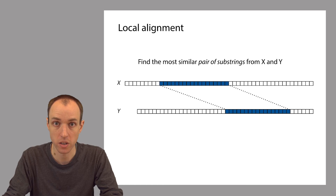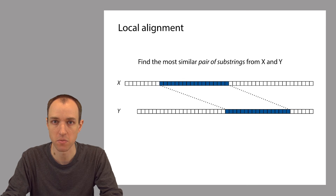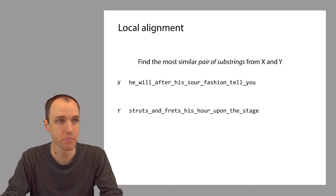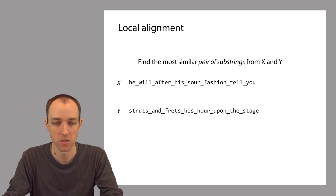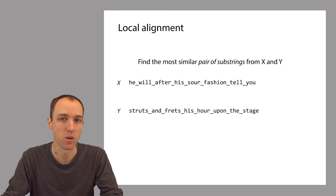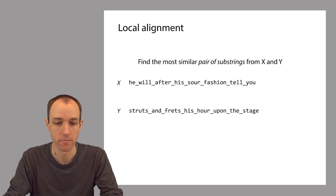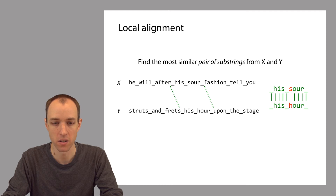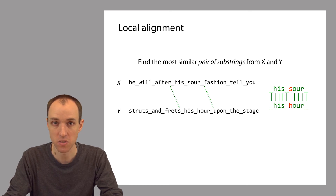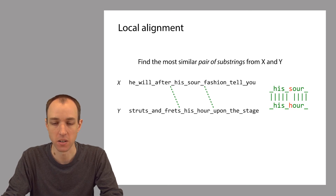We'll define more clearly later what we mean by most similar. But first, let me show a quick example to motivate the local alignment problem. Here are two strings — they're in English, so the similarities are more obvious to us. The question is: can you find a pair of substrings, one from x and one from y, that are the most similar? Looking at this example, it seems like the substrings in the middle are the most similar — they're at Hamming distance one from each other but have nine matching positions. This is approximately the kind of problem we're solving with local alignment.